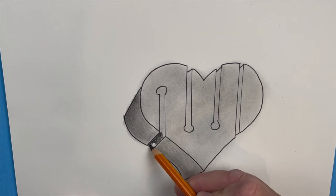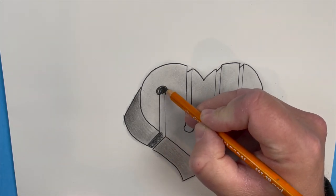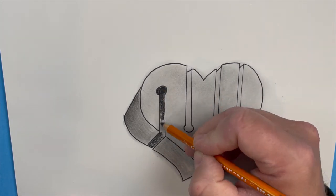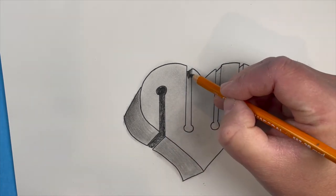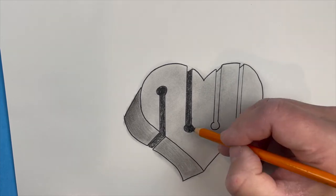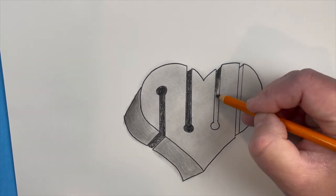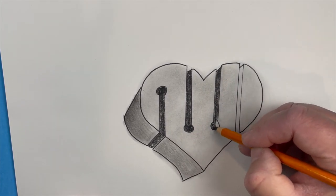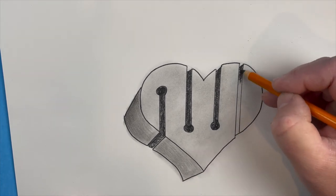Now in those inside cracks that we drew in the beginning, you're going to put a dark color inside there. You can use marker, you can use that same charcoal pencil, you can use a regular pencil, you can even use a dark black crayon. But you're going to color those in fairly dark all the way in from the top to the bottom just like so.